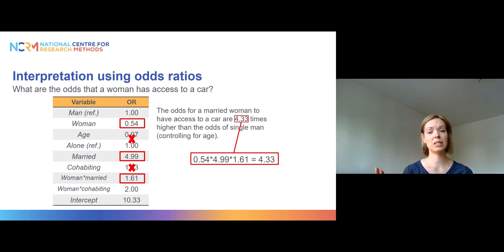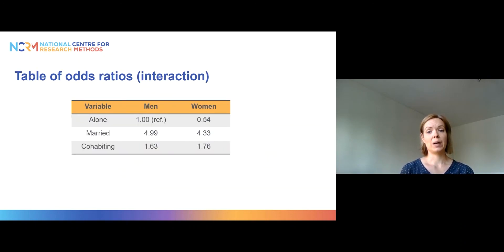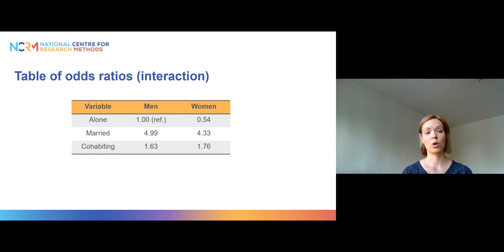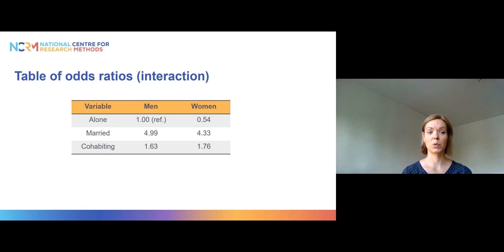For cohabiting women, we take into account the odds ratios for cohabiting and the interaction for woman times cohabiting, giving an odds ratio of 1.76. Putting all these odds ratios in a table, the interpretation is very similar to what we saw with probabilities. The odds for married men and married women are very similar, as are the odds for cohabiting men and women. But comparing single men and single women, it is much more likely that a man has access to a car — and that is our interaction effect.